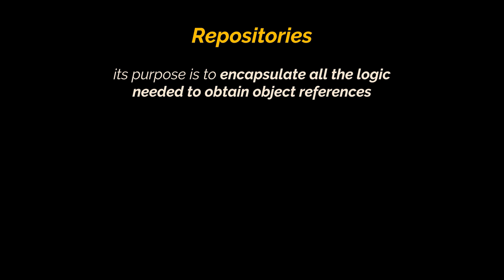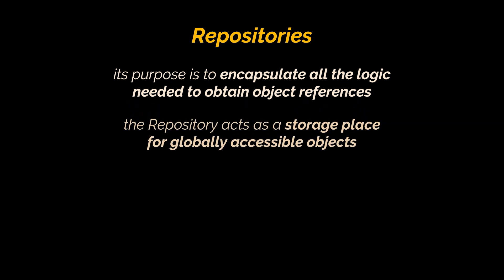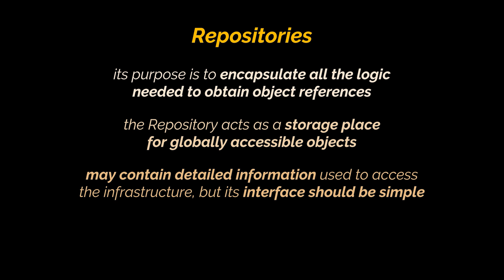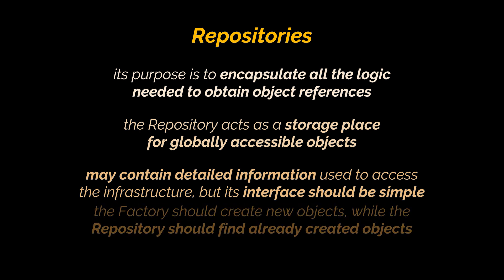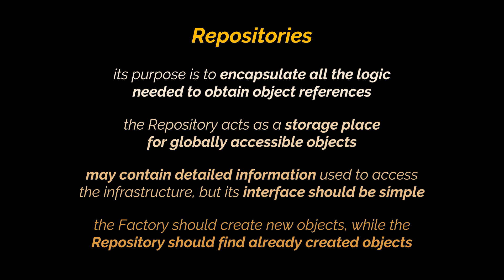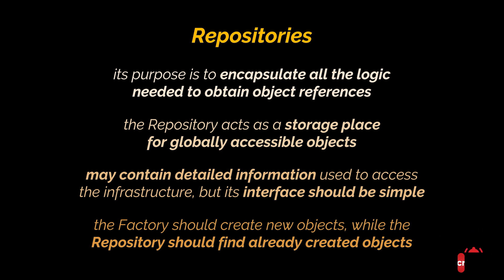To solve this, use repositories. A repository's purpose is to encapsulate all the logic needed to obtain object references. When an object is created it may be saved in the repository and retrieved from there to be used later. If the client requests an object from the repository and the repository does not have it, it may get it from storage. The repository should act as a storage place for globally accessible objects with a simple interface. The factory should create new objects while the repository should find already created objects. When a new object is to be added to the repository, it should be created first using the factory and then given to the repository to store.